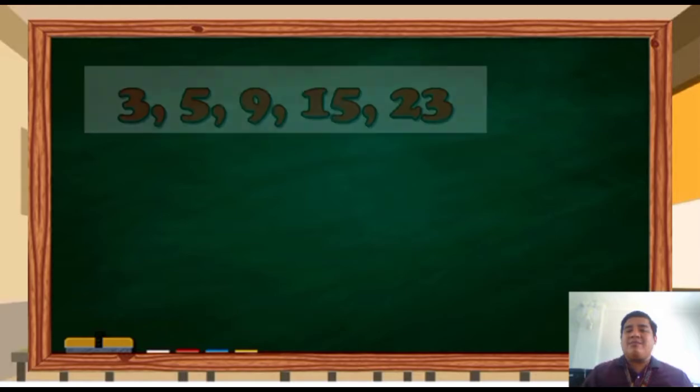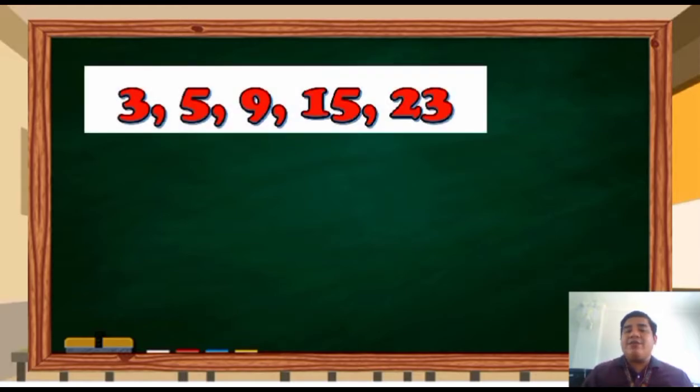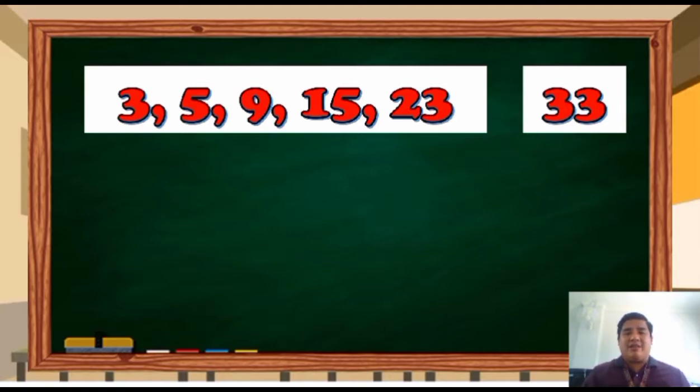What about this? Sequences. 3, 5, 9, 15, 23. Do you have any idea? The next element is 33. You just add 2, 4, 6, 8, and 10 from the preceding element. Increasing even numbers.